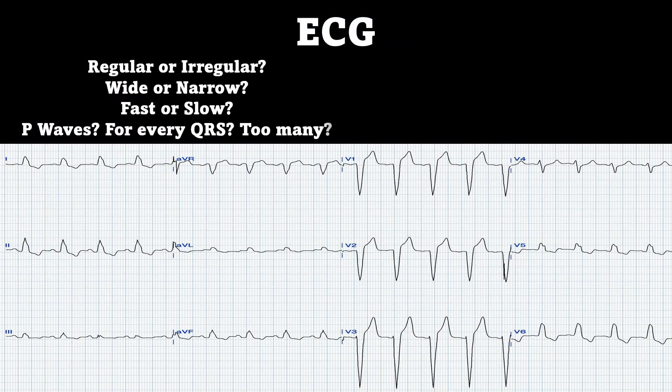So here's your 12-lead. First off, I want you to pause the video real quick and see if you guys can interpret it on your own. So first off, we're going to look for regular or irregular — this is going to be a regular rhythm. It's not looking like AFib to me or a variable conduction AFlutter.